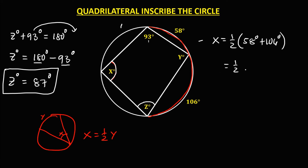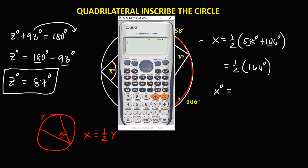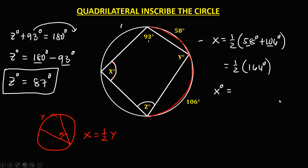So we have one half of 58 plus 106, that's 164 degrees. Therefore, angle X is equal to 164 divided by 2, so angle X is 82 degrees.